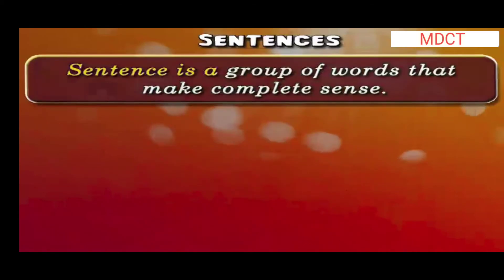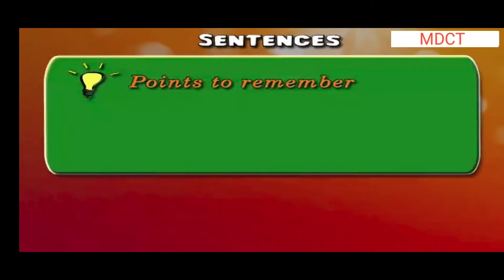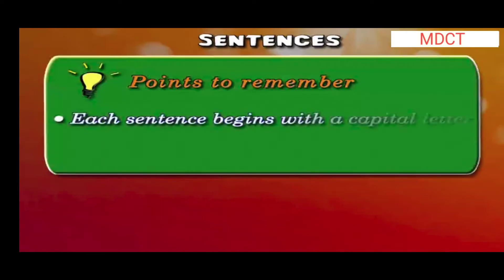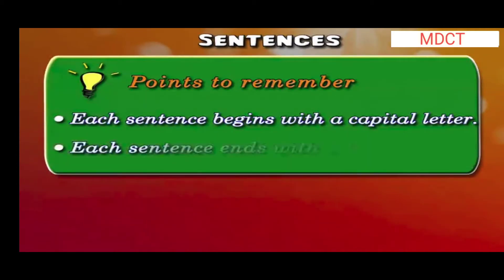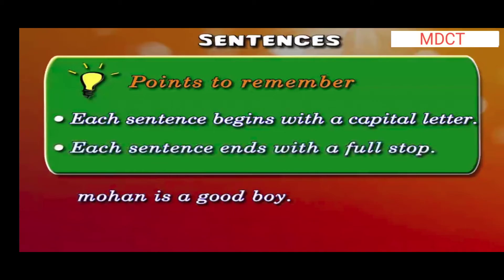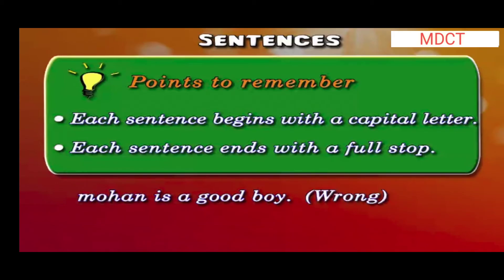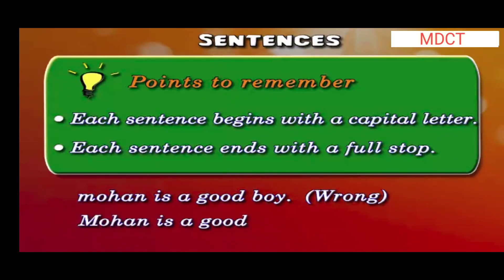Now, students, there are some very important points to remember. Each sentence begins with a capital letter. Each sentence ends with a full stop. For example, 'mohan is a good boy' — here the sentence starts with a non-capital letter M, hence this is not a correctly written sentence. 'Mohan is a good boy.' — now this is a correct sentence.